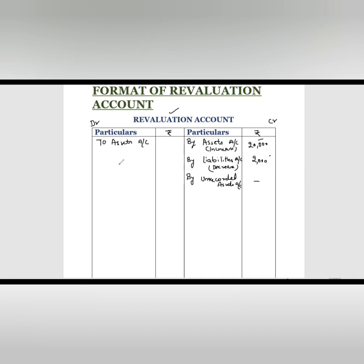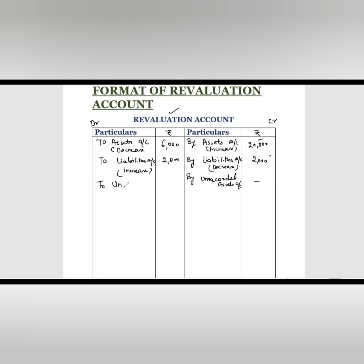For example, stock of Rs. 36,000 now valued at Rs. 30,000 — the decrease is Rs. 6,000, so we mention Rs. 6,000 on the debit side. If liabilities increase, we debit 'To Liabilities Account' — for example, if a provision for workmen's compensation is created. If there is any depreciation charged, we also record it on the debit side. Similarly, unrecorded liabilities are written as 'To Unrecorded Liabilities.'